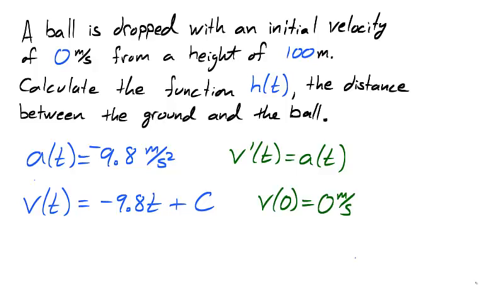In the problem, we were told that the initial velocity, time 0, was 0 meters per second. So 0 is equal to v of 0, which is equal to negative 9.8 times 0 plus c, or just c. So the constant c is 0.